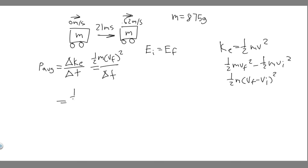So 1/2 multiplied by m, which is 875 grams, which is 0.875 kilograms. There's 1,000 grams for every kilogram, so the grams cancel and you just have kg. Divide by 1,000 and that becomes 0.875.